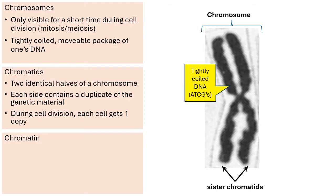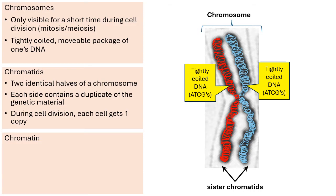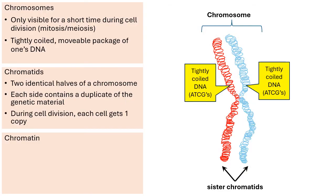The chromatids are tightly coiled DNA — A's, T's, C's and G's. I'm going to draw the left chromatid as a curling red squiggly line, and the right chromatid as a tightly coiled blue squiggly line — also the exact same A's, T's, C's and G's. If we focus just on the red squiggly line and the blue squiggly line, that's the coiled DNA. There's our chromosome.